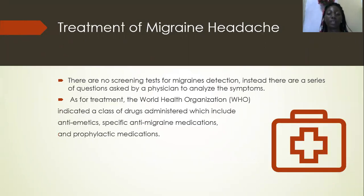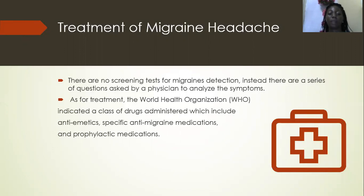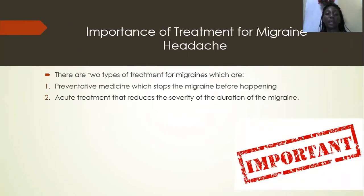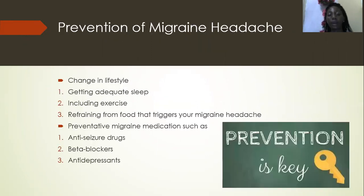Treatment: there are no screening tests; however, a series of questions is asked by a physician to analyze the symptoms. Drugs are administered such as antiemetics, specific anti-migraine medications, and prophylactic medications. There are two types of treatment: preventative medicine and acute treatment. Prevention of migraine includes changing lifestyle and can also be achieved by medication.